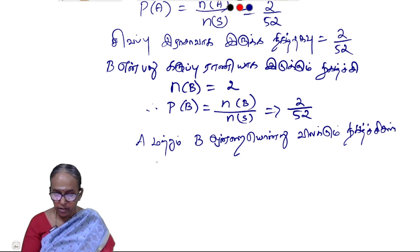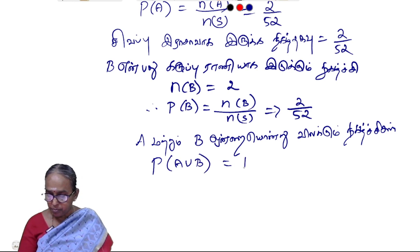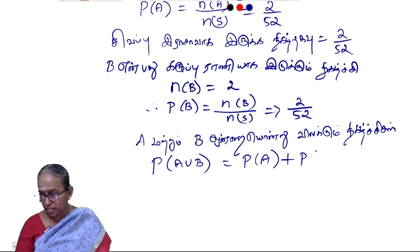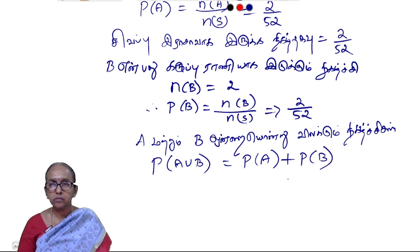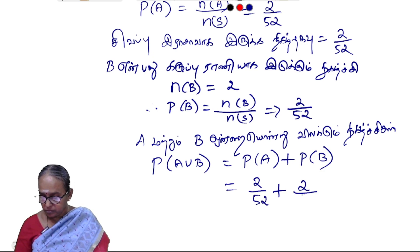In a way, P of A union B is equal to P of A plus P of B. The intersection is equal to 0. This is 2 by 52. So 4 by 52.